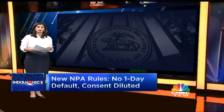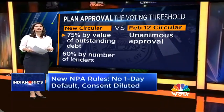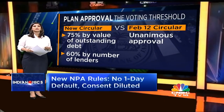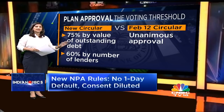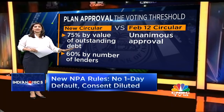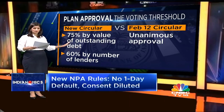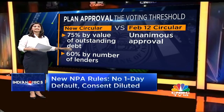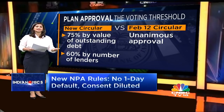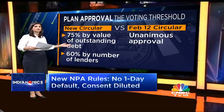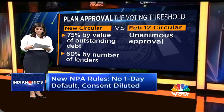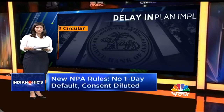The voting threshold has also been brought down. The February 12 circular said that any resolution plan can be passed only if unanimously approved by all lenders. But in this circular, the RBI says that if it's 75% by value and 60% by number of lenders, then a resolution plan will be deemed passed.